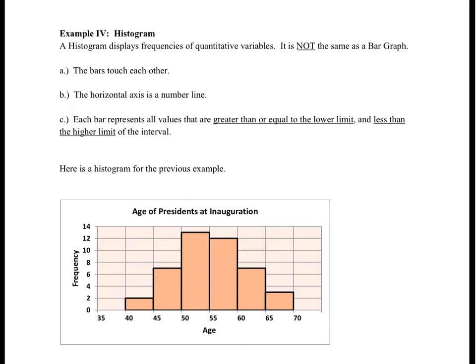The next data chart is a histogram. A histogram displays frequencies of quantitative variables—quantitative means numerical. When variables have numerical value, a histogram displays the frequencies or how many numbers fit into that category. This is not the same as a bar graph. Some key differences: first, the bars touch each other. Second, the horizontal axis is a number line.